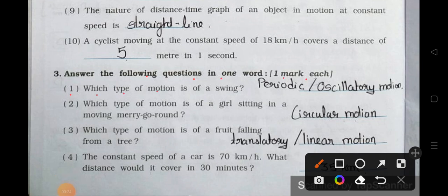Number one: which type of motion is of a swing? Periodic and oscillatory motion. Number two: which type of motion is of a girl sitting in a moving merry-go-round? Answer is circular motion.